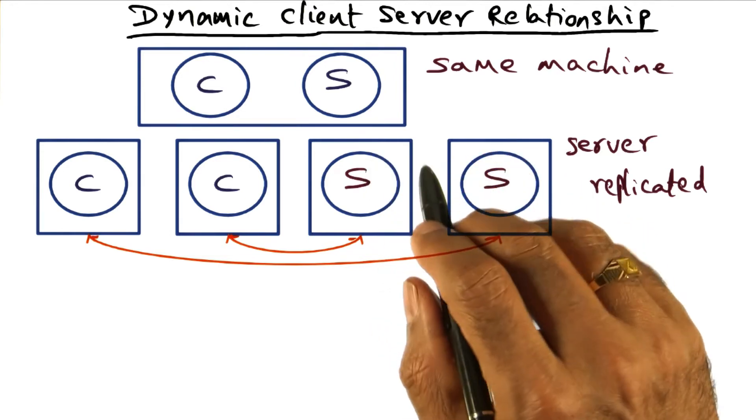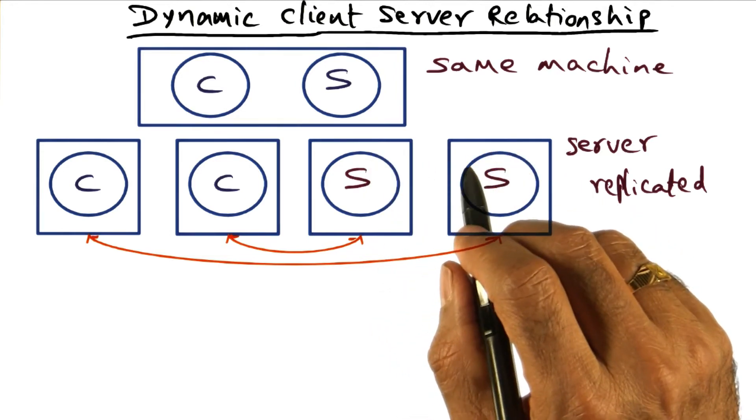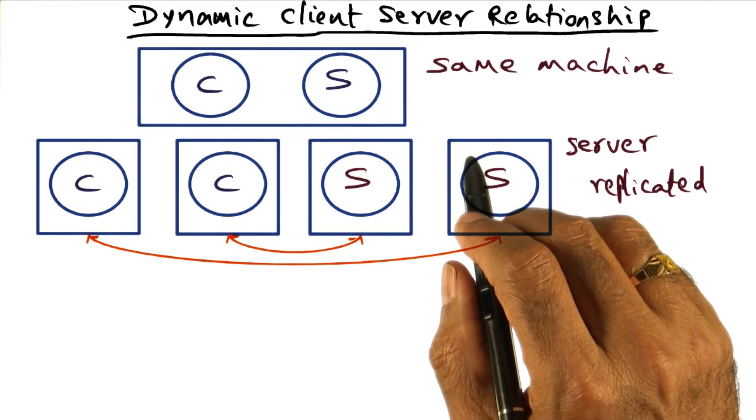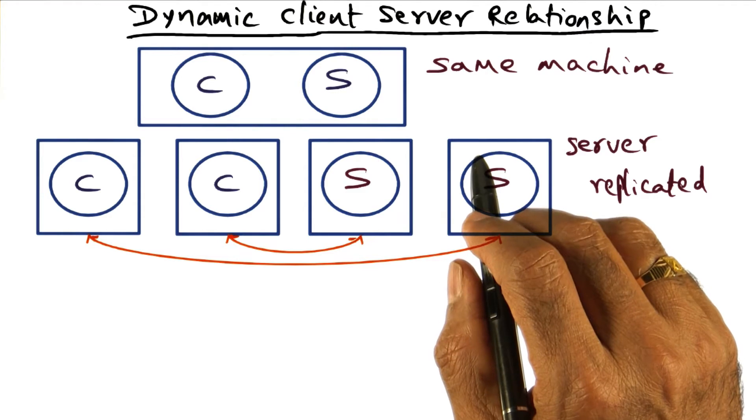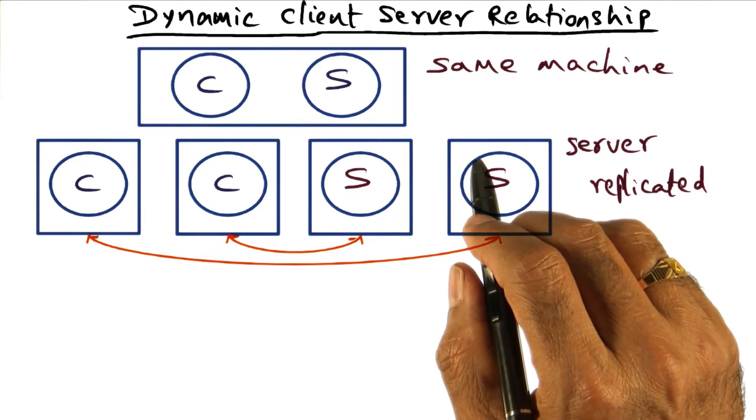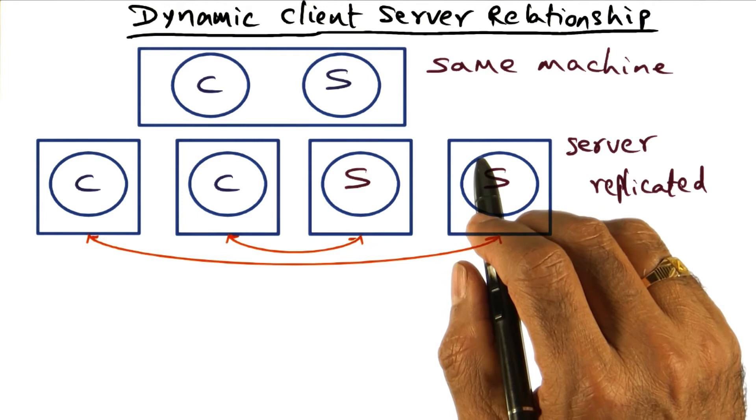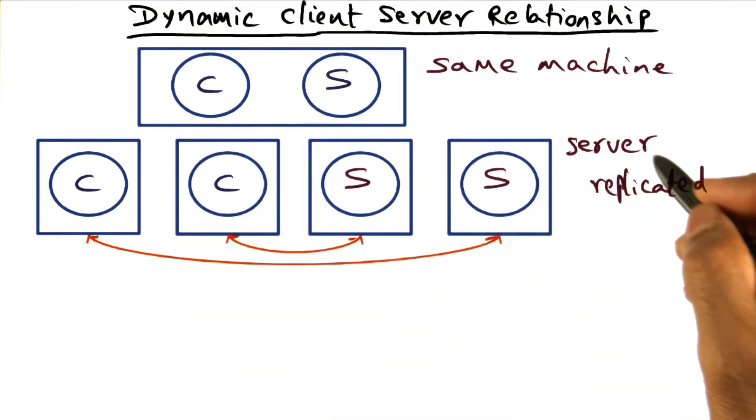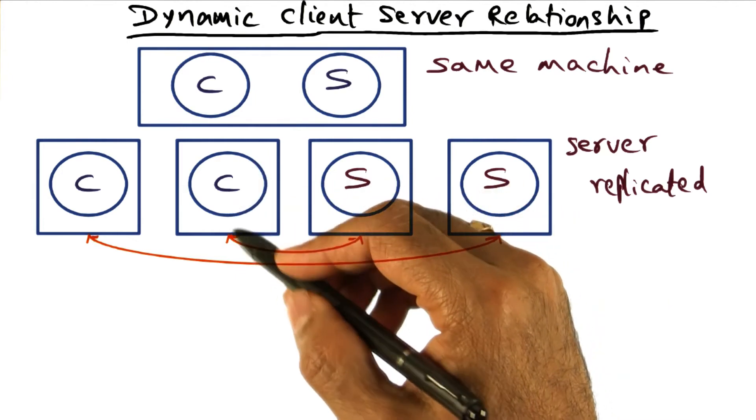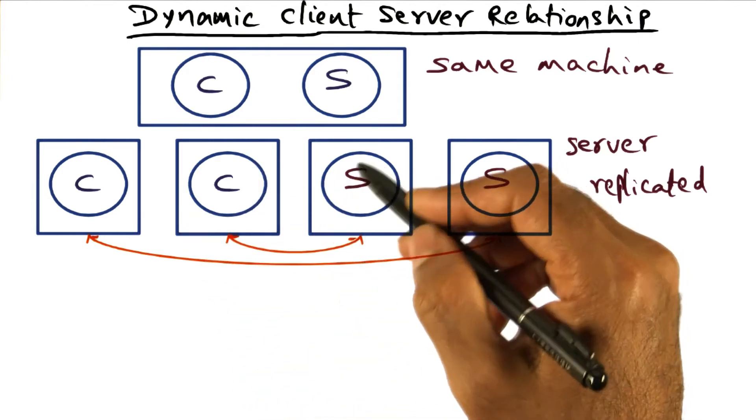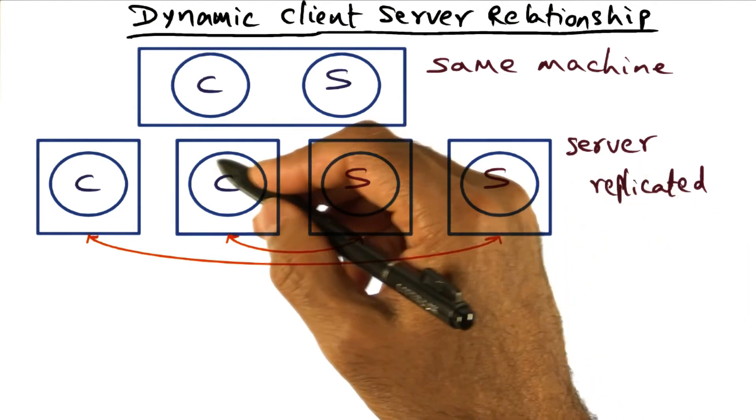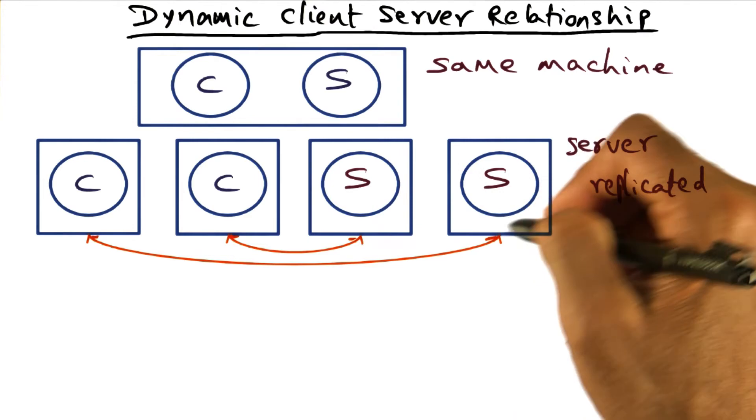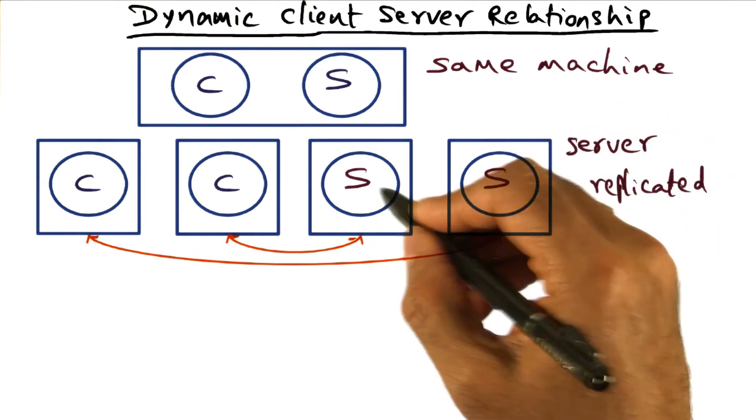And for those of you familiar with how services like Google work today, this is exactly what happens in services that we use on an everyday basis when we access Google. Our client requests are being routed to different servers, and this is the same sort of thing that is happening in the Spring system, that once you replicate the server, you want the client request to be routed to different servers, depending on the physical proximity of the client to the servers, as well as the load that is currently being handled by one server versus another.